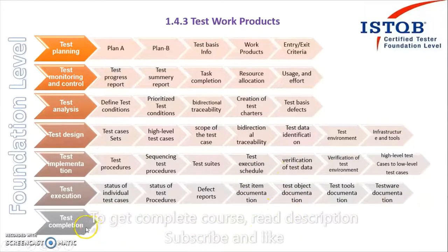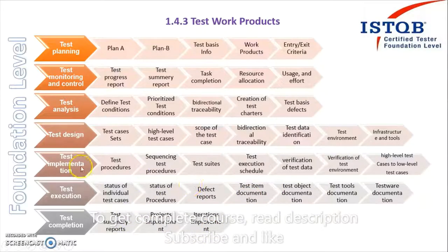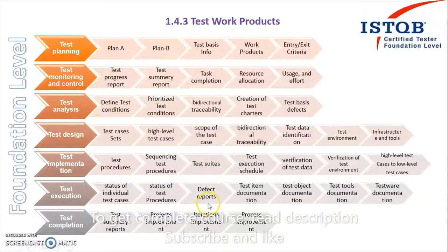The last phase is the test completion stage. This includes the test summary report. It also covers project improvement — if there is any scope for improvement, it will be discussed here and used for the next project or next cycle. Iteration improvement covers whether the way we are iterating, executing, or prioritizing can be improved. Process improvement reviews the full cycle to see if anything can be added to make it more effective.